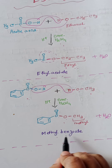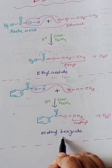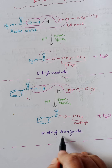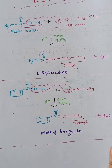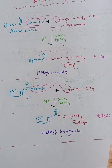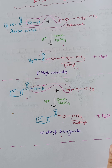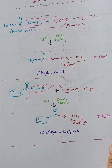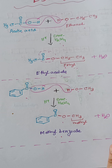The name of this ester is methyl benzoate. This kind of reaction is known as esterification — when a carboxylic acid and an alcohol react in the presence of concentrated sulfuric acid and a new compound forms which is known as an ester.